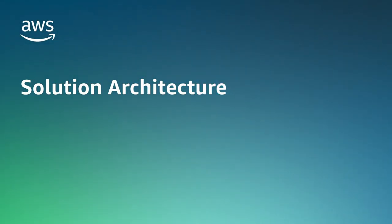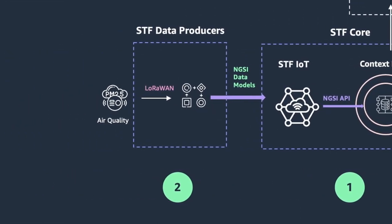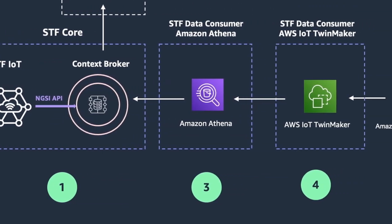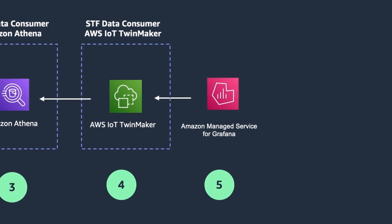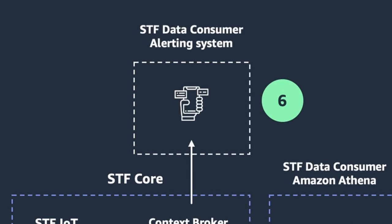Let's start with a simplified view of the solution architecture. There are six components in this solution. We'll start first by deploying the core of the STF — the Smart Territory Framework. The STF is open source and built on open standards. It enables decoupling data producers from data consumers, making it easier to build scalable, sustainable and interoperable solutions. Once we have our foundations set, we will connect our sensors and build data producers.